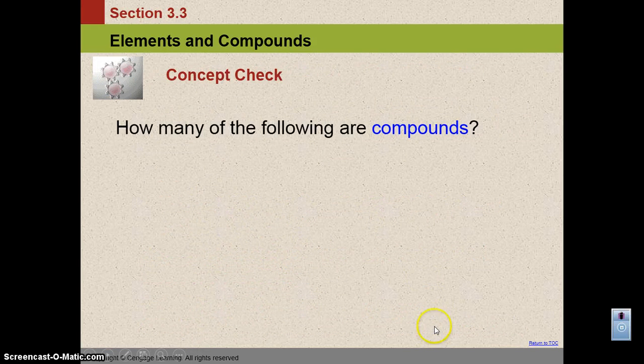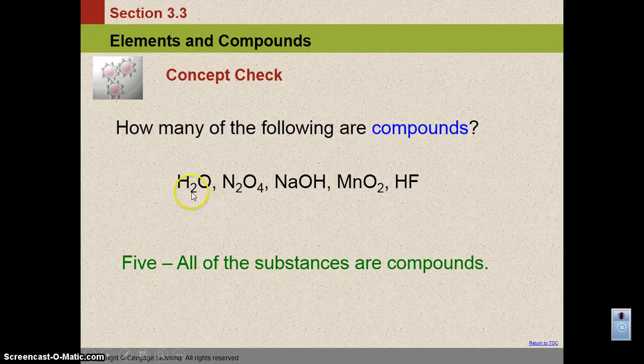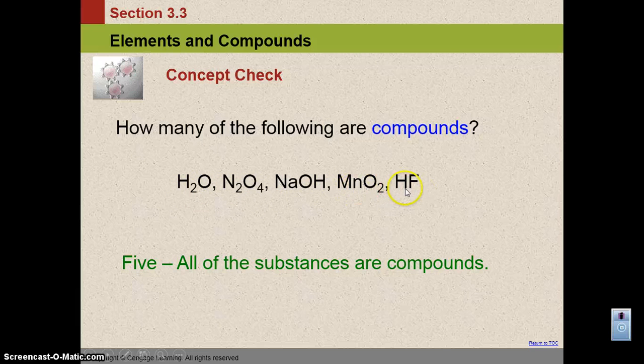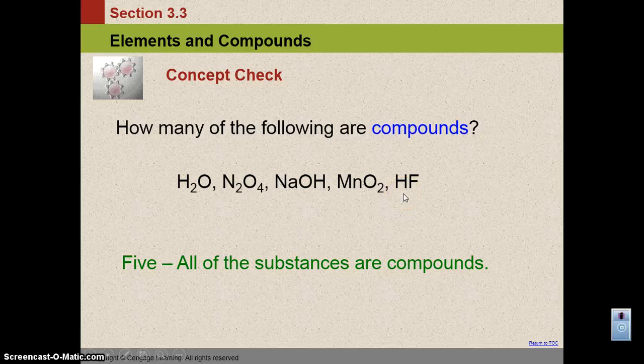So how many of the following are compounds? Well, if you look at them, all of them are compounds because they're made up of more than one type of element. You can see those there, and these are legitimate. We have water, we have dinitrogen tetraoxide, sodium hydroxide, manganese 4-oxide, and hydrofluoric acid. So these are examples of compounds.